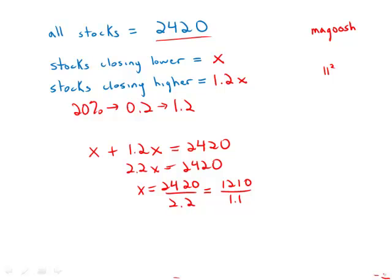It helps to remember, incidentally, that 11 squared is 121. So this divides nicely to 1100. So X equals 1100.